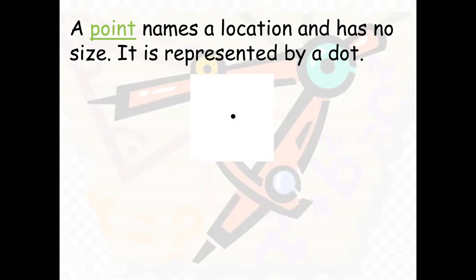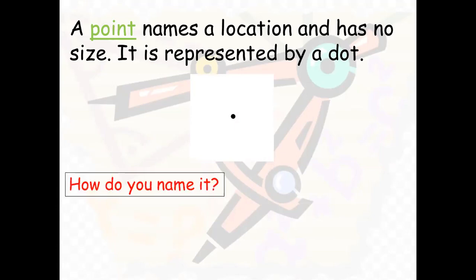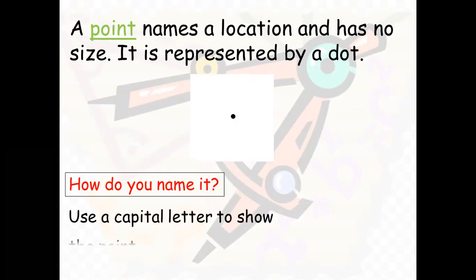It's a dot. Now, how do you name it? If there are many dots on the paper, how do you know which dot we are talking about? If I have drawn four dots and say 'put your finger on point A,' how do you know which point I mean? So we use a capital letter to name a point — any letter from A to Z. So here are four points: point A, point B, point C. You can name them any letter you want, not necessarily in any order.